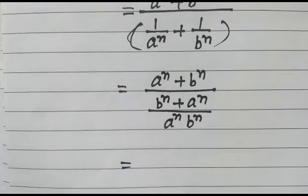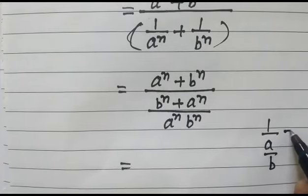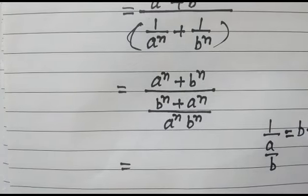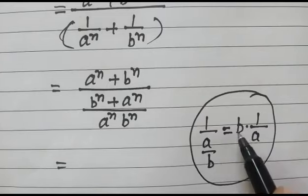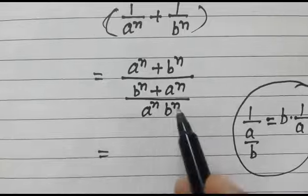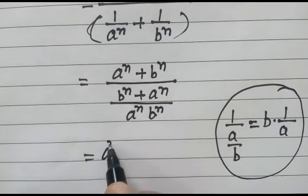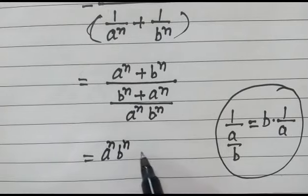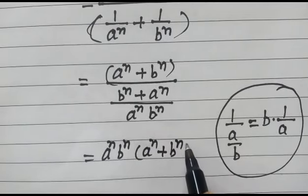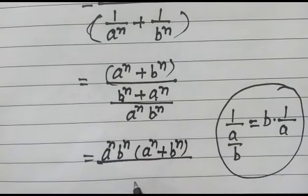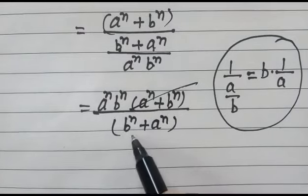Now in the next step, as we know, 1 over a over b can be written as b into 1 over a. So here we will apply this: a to the power n, b to the power n, a to the power n, b to the power n. And this a to the power n plus b to the power n, over b to the power n plus a to the power n — this will cancel out with each other.